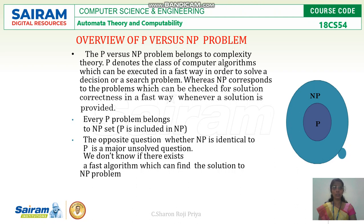What is a decision problem? Given a problem, if I have a solution for the problem it is known as a decidable problem, and I'll definitely be having a Turing machine to do the computations.